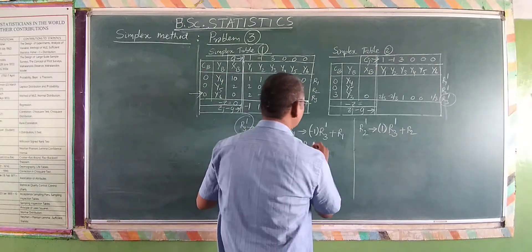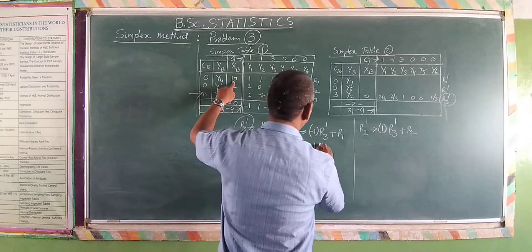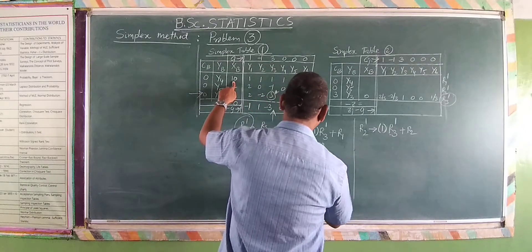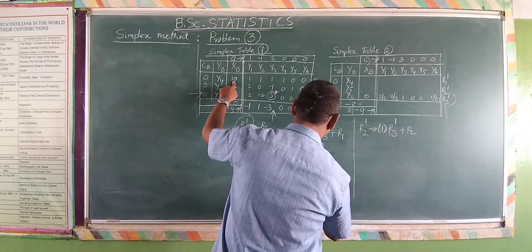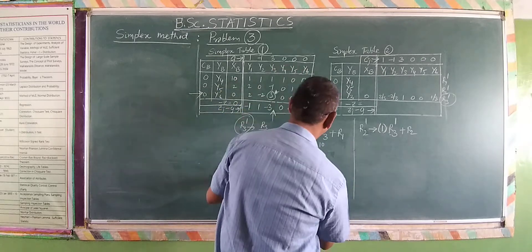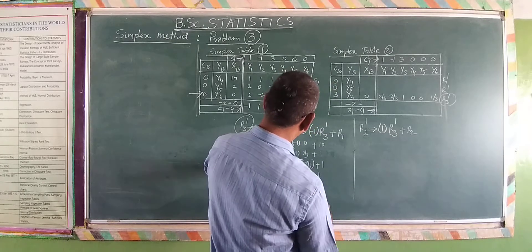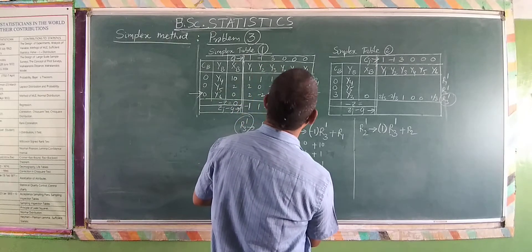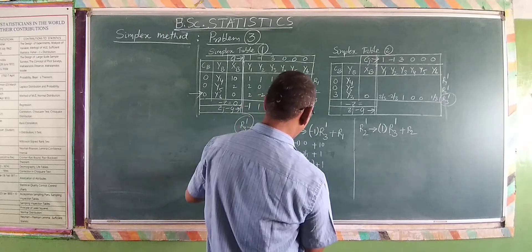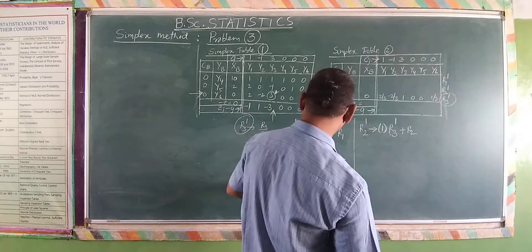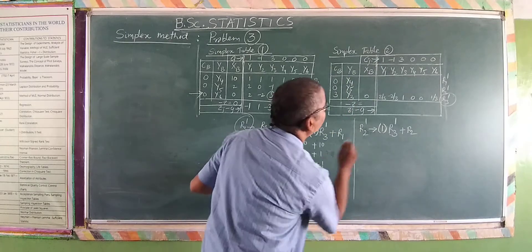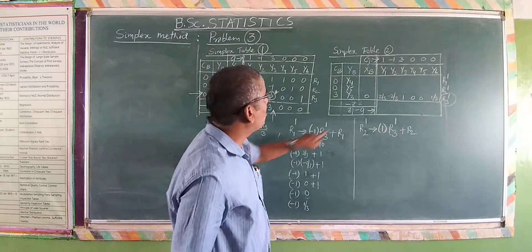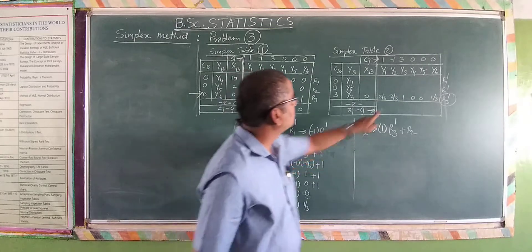Plus r1 starts from xb = 10. Adding: 10 plus the r1 elements. Don't forget xb — that is an important point. The r1 values are: 0, 2/3, minus 2/3, 1, 0, 0, 1/3. These are computed as: 0; 2/3; minus 2/3; 1; 0, 0; and 1/3.